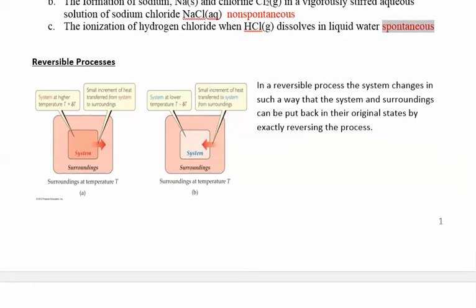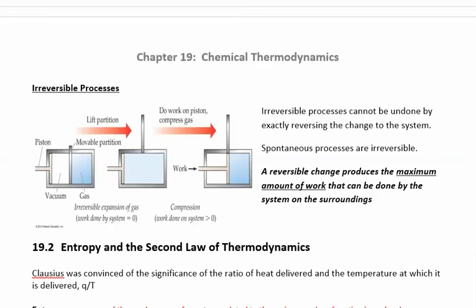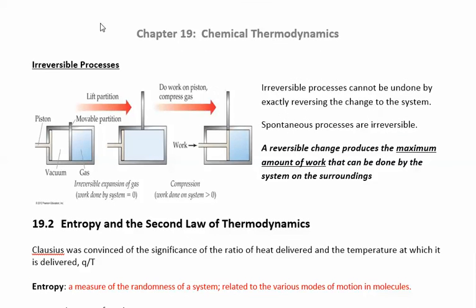Now, spontaneous processes are all irreversible. So irreversible processes are when you do something, but you can't just undo it to get back to where you were. For example, if you had gas trapped in this container here, and you had a movable partition, and you can just take this out, all of the gas is going to expand to fill up the container. If I just put this partition right back in, will everything go back to the one side? No, you just end up with two sides of the container full of gas. So that's why this is an irreversible process, because if I just put it right back, I don't get back to where I was. So I can't undo what I did to get back to where I was.